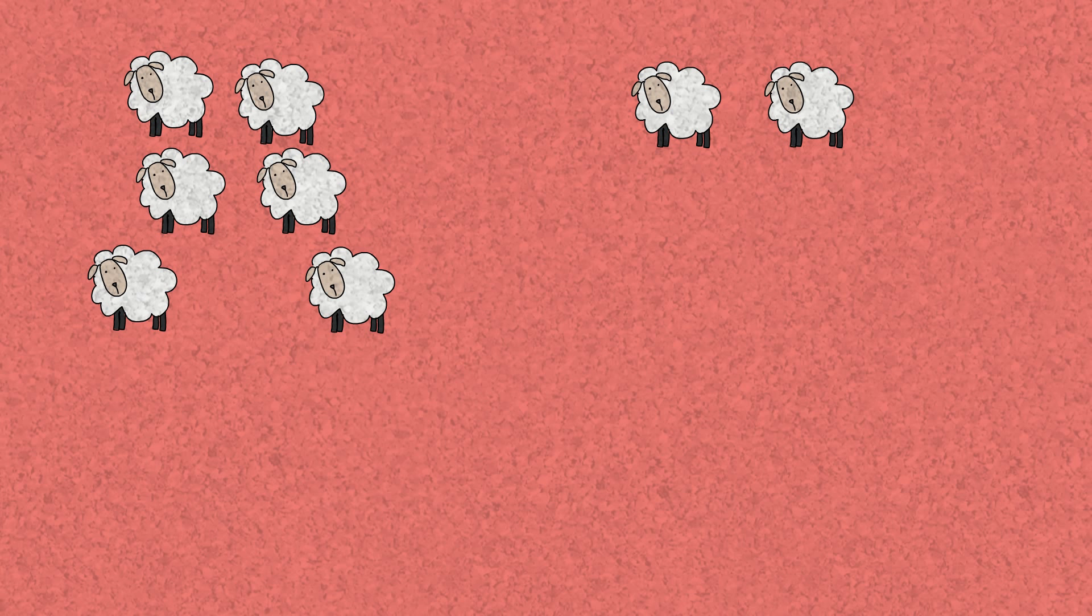So we will start by taking one sheep away and counting how many we have left. So we remove one and we have seven left. Okay, let's do it again. Seven take away one which is six, and let's repeat that process.